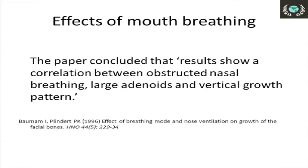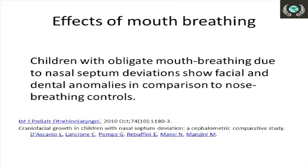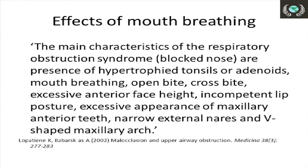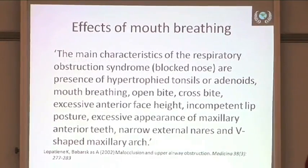The paper concluded that results show a correlation between obstructed nasal breathing, large adenoids, and vertical growth pattern. Another paper: children with obligate mouth breathing due to nasal septum deviations show facial and dental anomalies in comparison with nose-breathing controls. A study of 73 children between the ages of 3 and 6 concluded that mouth breathing can influence craniofacial and occlusal development early in childhood. The main characteristics of the respiratory obstruction syndrome include a blocked nose and hypertrophied tonsils. In many children who have enlarged tonsils, if addressed, the tonsils can shrink in some cases, as can the adenoids and nasal polyps.